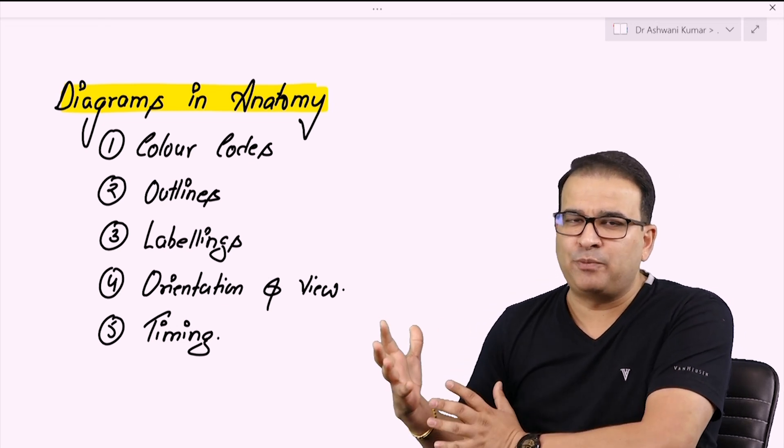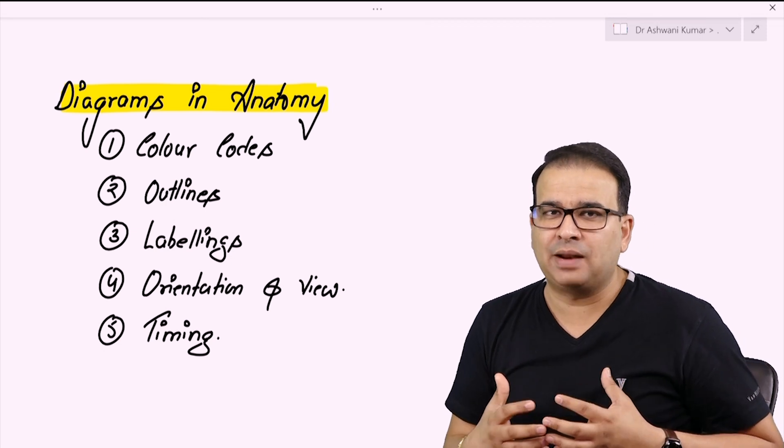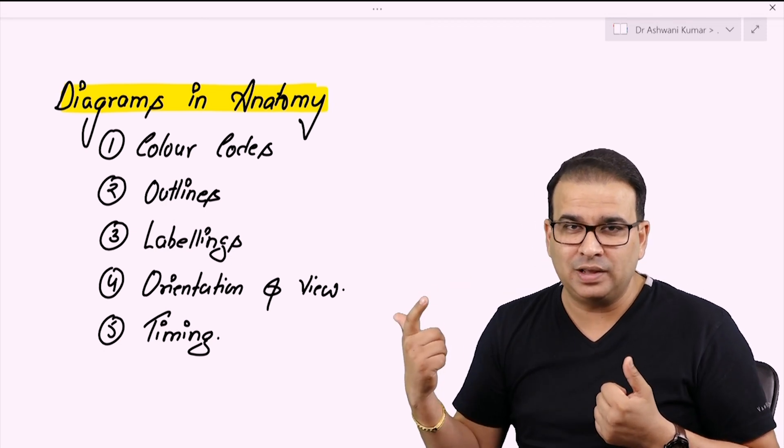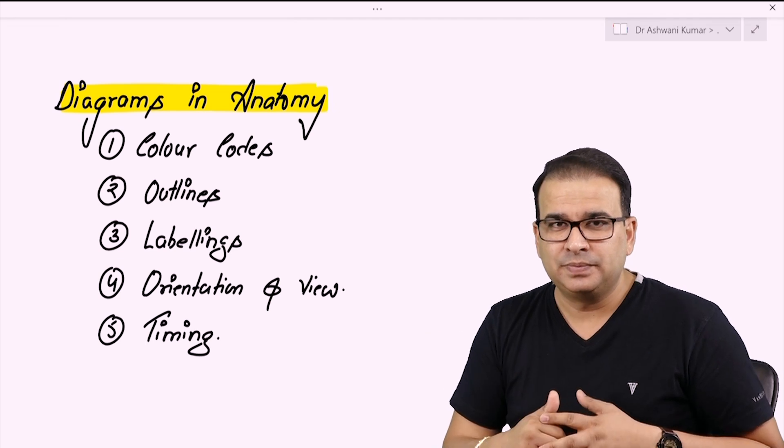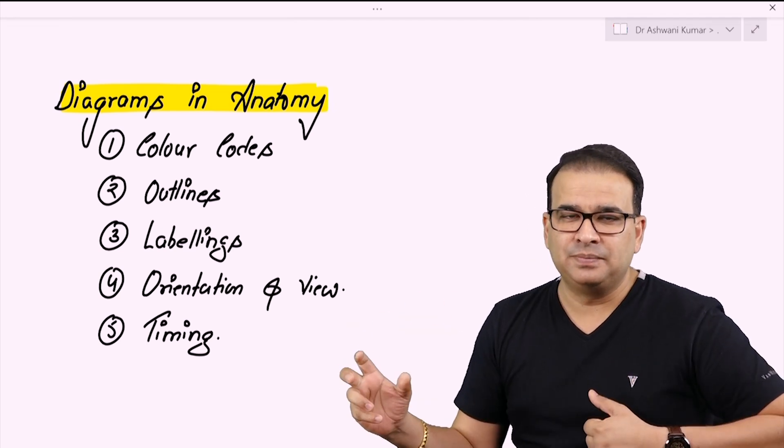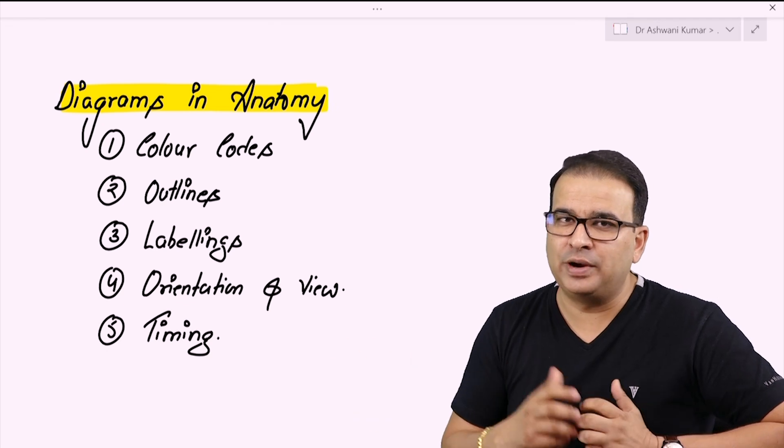According to me, the five points which are very important to draw the diagram effectively and to fetch the maximum marks are: color coding, the outline of the diagram, labeling, orientation, and the timing. Let's talk about all the five points very quickly.